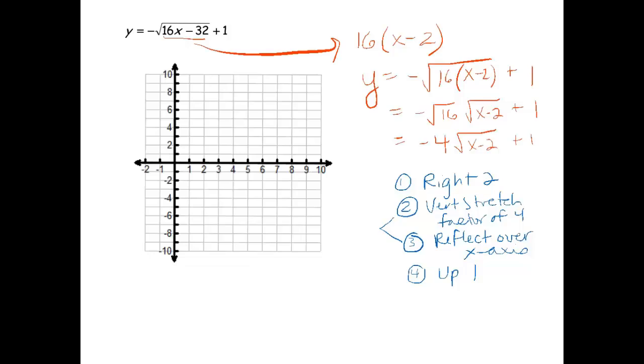So again, we're going to start with our point at 0, 0. Here we go, right 2, 1, 2, vertical stretch, and the reflection isn't going to change a value of 0.